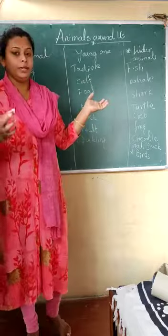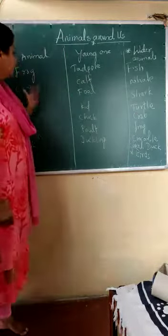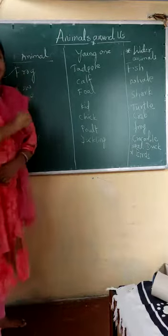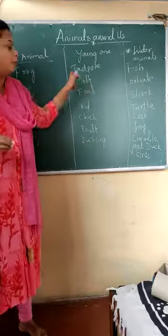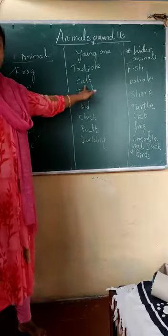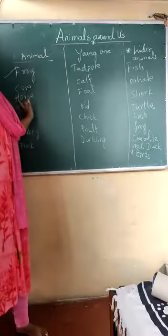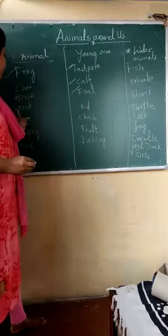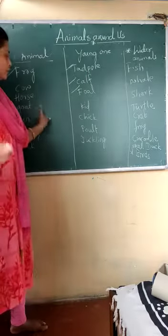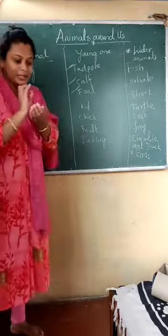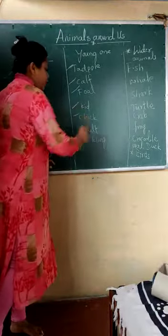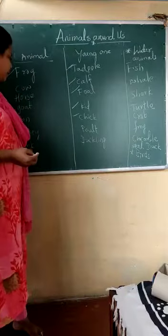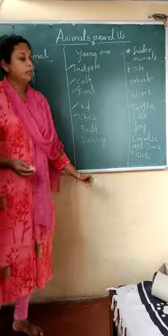Children, we have also learned about the young ones of animals. The young one of a frog is called a tadpole. The young one of a cow is called a calf. The young one of a horse is called a foal. The young one of a goat is called a kid. The young one of a hen is called a chick. The young one of a turkey is called a poult. The young one of a duck is called a duckling.